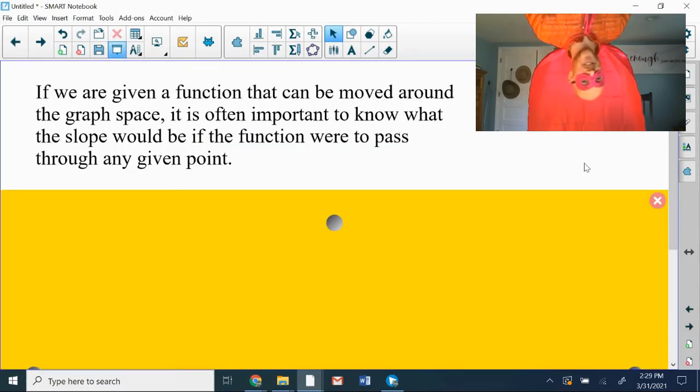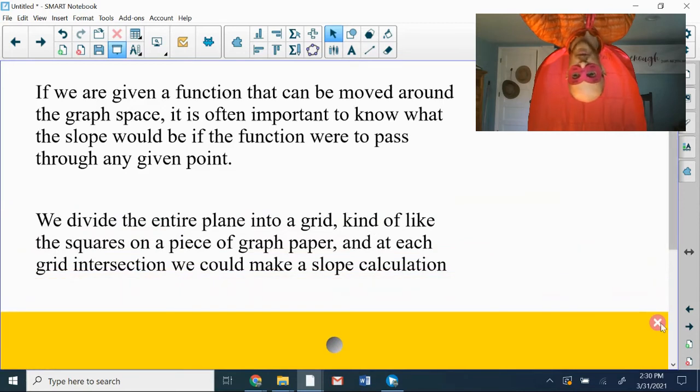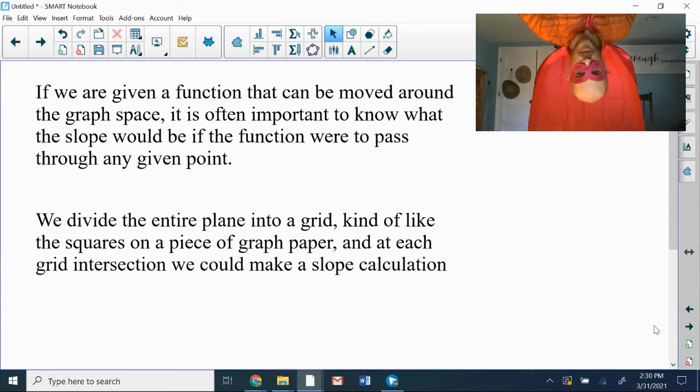Okay. So what is the slope field you ask? Well, if we are given a function, we could imagine moving that around in the X, Y space of a graph. And it's going to be important, obviously very important, to know what the slope would be at any point where you might happen to move that graph. So we're going to divide the entire X, Y plane into a grid, just kind of like a graph paper. And at each one of those little intersections, we're going to make a slope calculation.